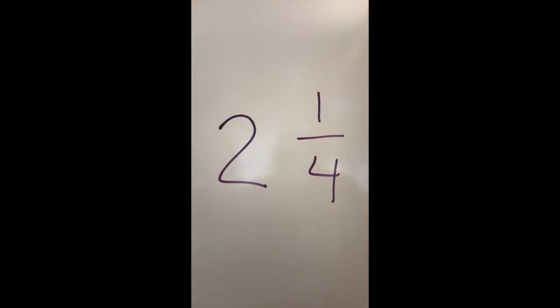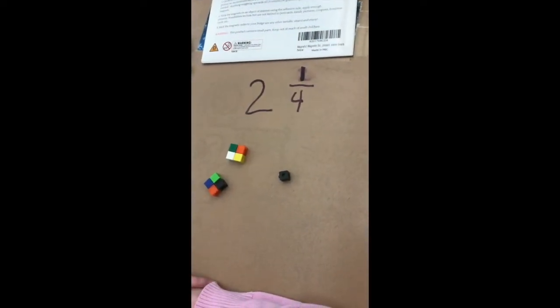The models of mixed numbers and improper fractions. Everybody make a model of two and one-fourth. I'm going to give you a hint that we're talking about cars and loose tires. You're showing me two and one-fourth.